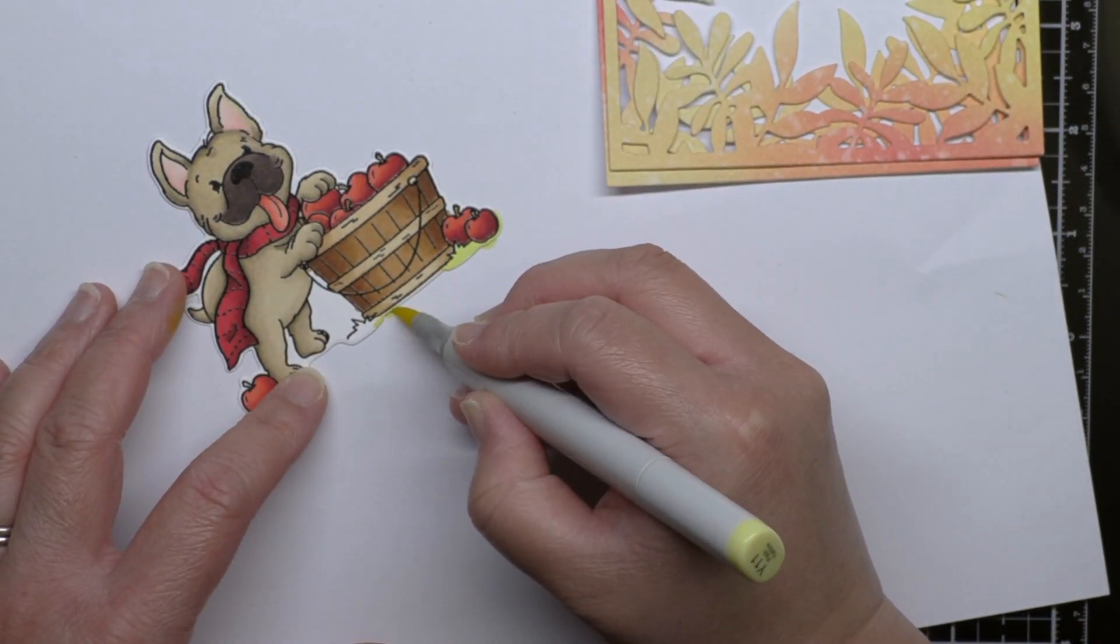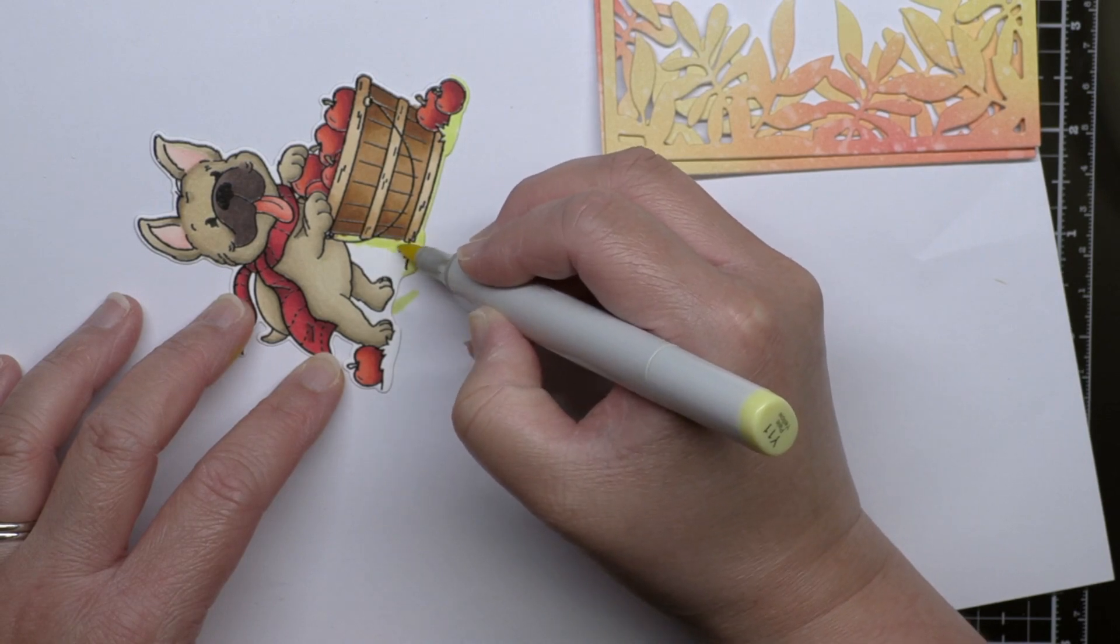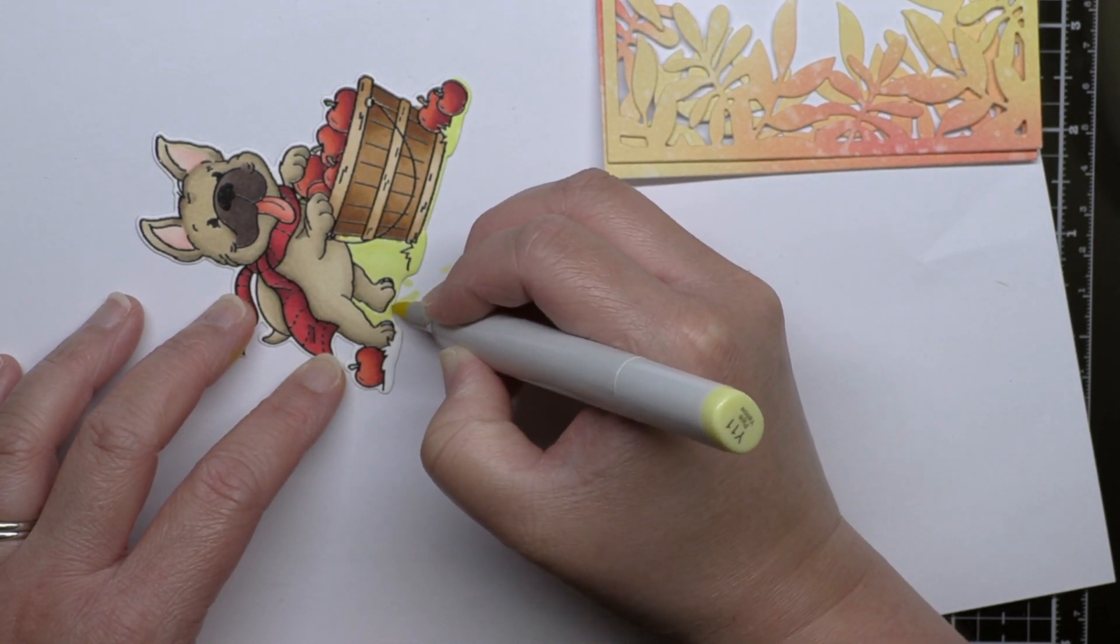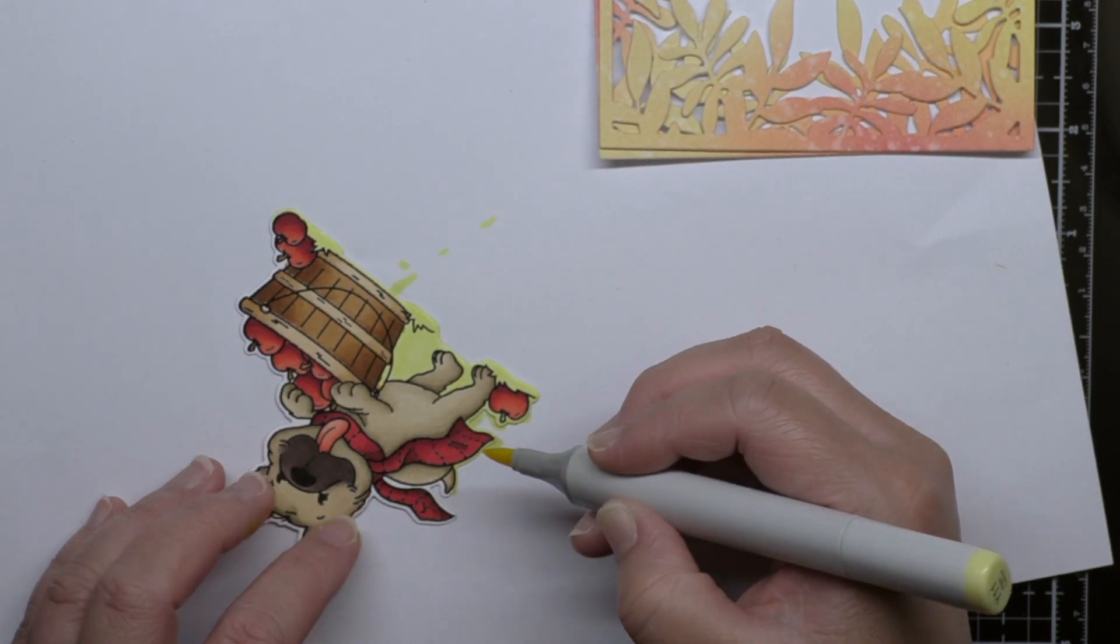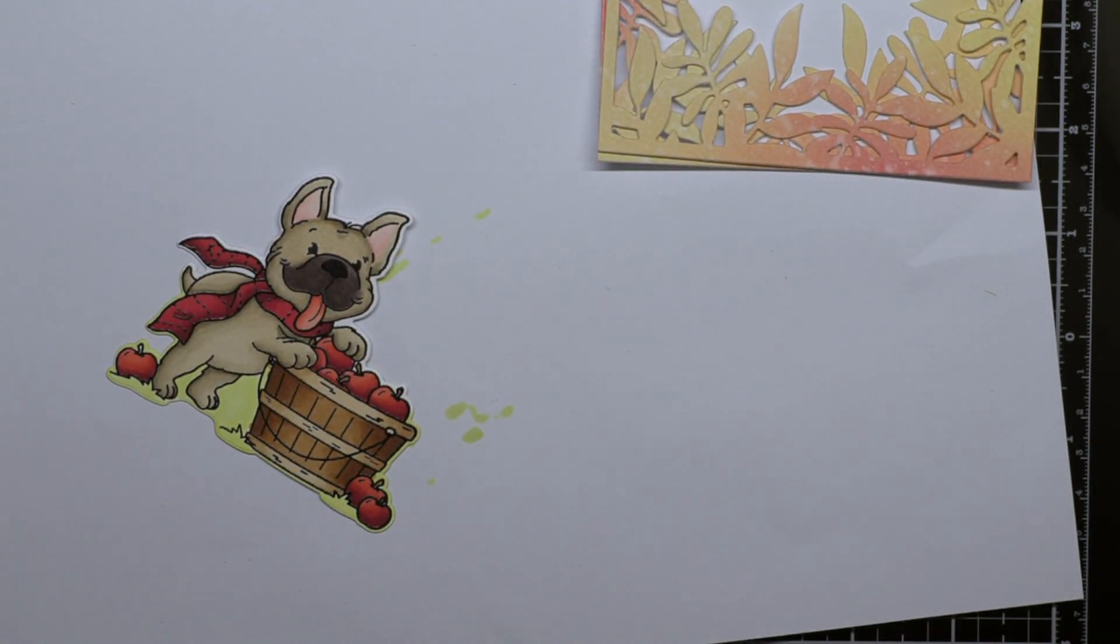I die cut the two border panels with the Leafy Frame Border Die from Simon Says Stamp. Then I used similar Copic marker shades to color the outline of my die cut Frenchie to match the background. I like using this trick to create a more seamless effect.